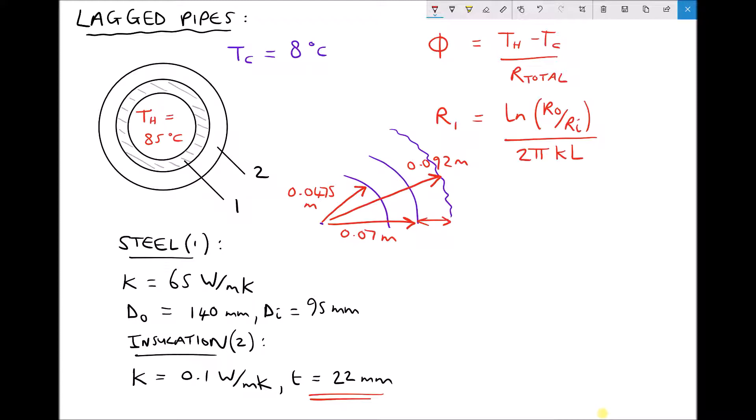So now we have the inside radius of the pipe and the outside radius of the pipe of 0.07m. But now if we think about the layer of insulation, we also have the inside radius of the layer of insulation, which is going to be 0.07m. It's the same as the outside radius of the pipe. And we also have the outside radius of the insulation because we know that the insulation is 22mm thick.